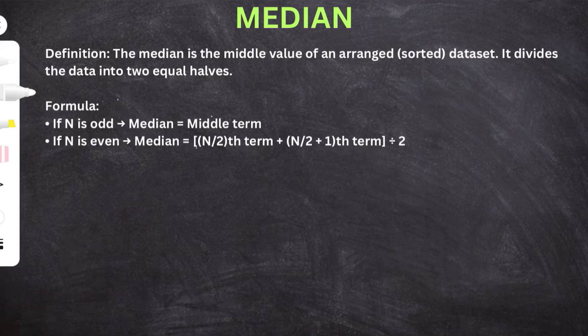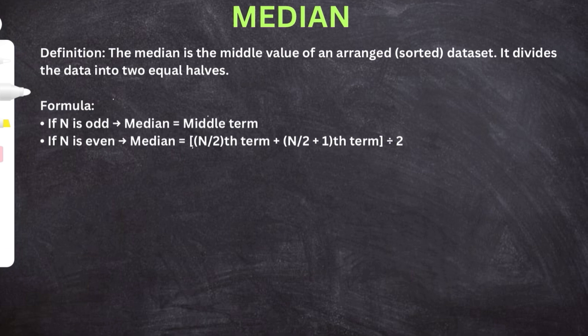The median is the middle value of an arranged, sorted data set. It divides the data into two equal halves. If n is odd, the median is equal to the middle term. If n is even, the median equals the average of the (n/2)th term and the (n/2 + 1)th term.